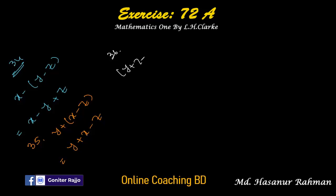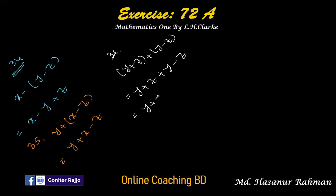Number thirty-six: y plus z plus (y minus z). Expanding: plus into minus z is minus z. Rearranging: y plus y is 2y; z minus z cancels to zero. The answer is 2y.